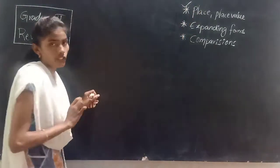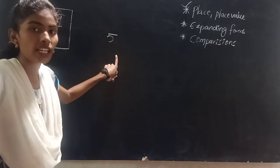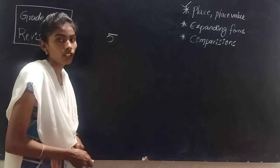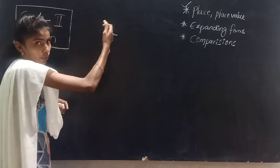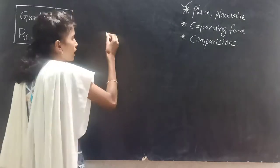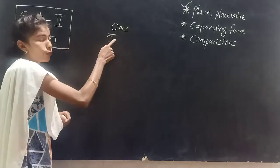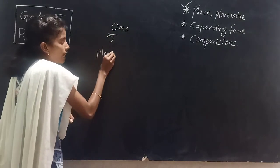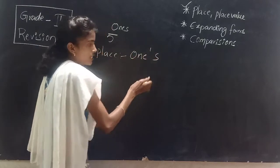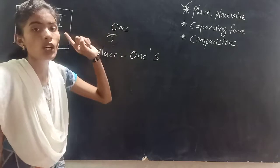Place and place value is the first topic. I have given a number here — the number 5. If I ask you to say the name of the place, what you have to say — what is the place value and what is the place for this number. While writing places, every time we have to start from the right side. The first place name is ones place. So 5 is in ones place. This is a single digit number. In a single digit number we have only ones place value.